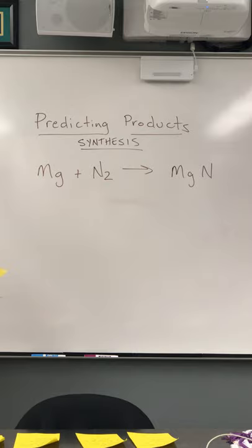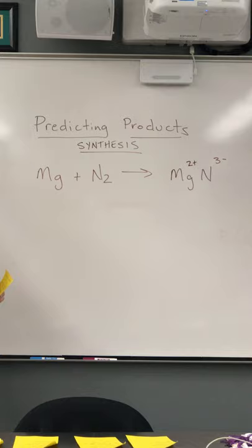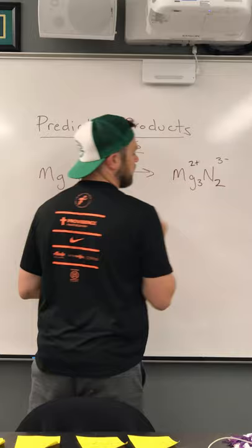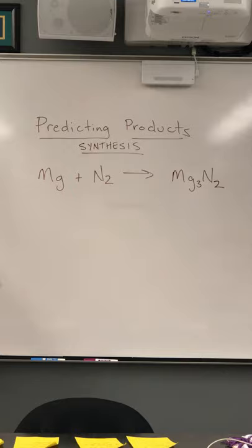Next thing, we need to make sure that we take our charges for each of these two things and we need to cross them. So magnesium has a charge of 2 plus, nitrogen has a charge of 3 minus. So we're going to take those and we're going to cross them and we're going to end up with Mg3N2.